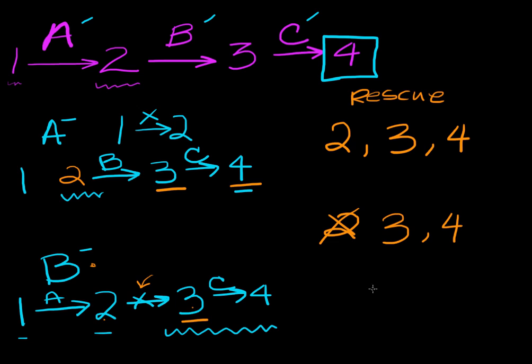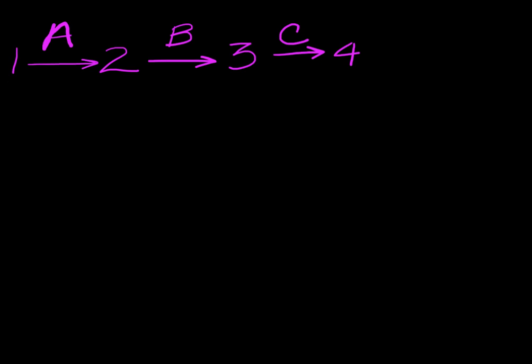So now I want to see what we expect from the results of a Beadle and Tatum type experiment. So what we expect to see is for an A minus, B minus, and C minus strain. So we expect to see different kinds of rescue.